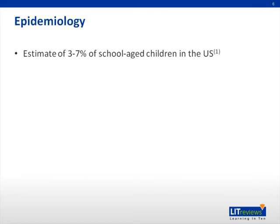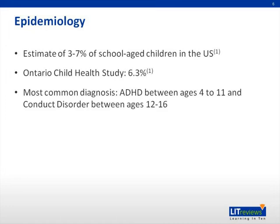Epidemiology: there is an estimated 3–7% of school-aged children in the US who are afflicted by ADHD. From the Ontario Child Health Study, an estimated 6.3% of children are afflicted with ADHD. The most common diagnosis of ADHD is between the age of 4 to 11, and conduct disorder between the age of 12 to 16. It affects 4% of adults in the United States population.